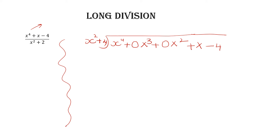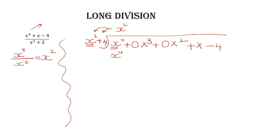The first term of the dividend is divided by the first term of the divisor: x⁴ divided by x². Subtracting powers, 4 minus 2 gives you x². Write x² in the quotient. Now one by one multiply x² with the divisor: x² times x² gives you x⁴, and x² times 4 gives you 4x². Write +4x² under the x² column.